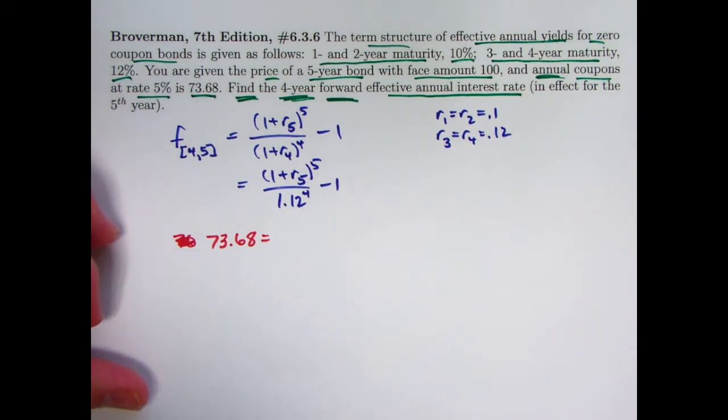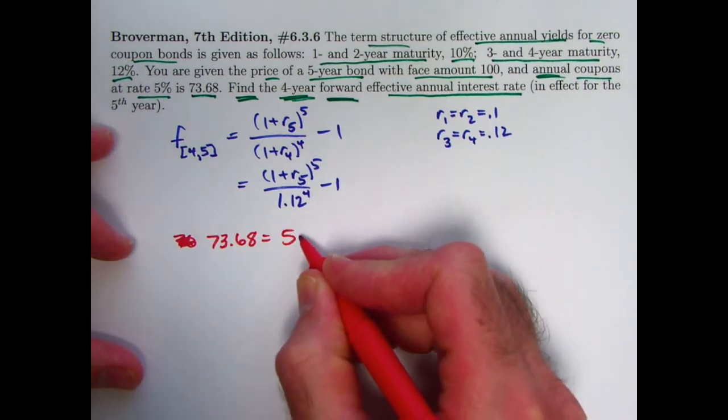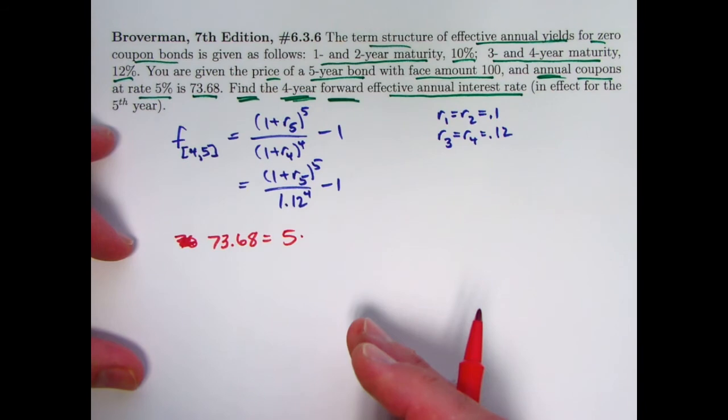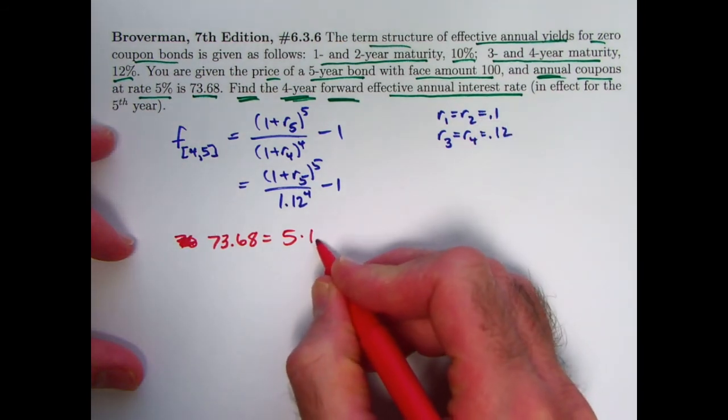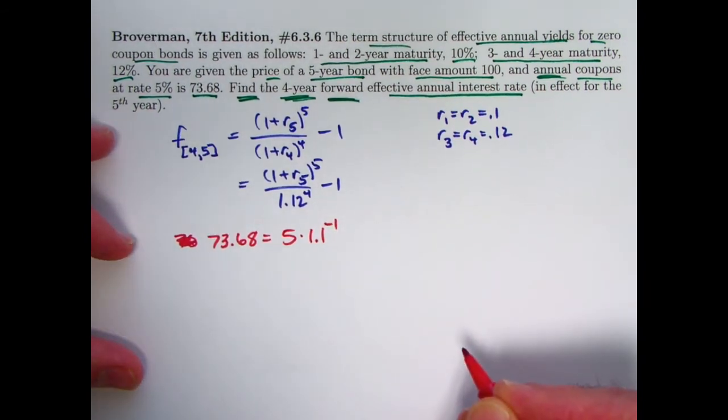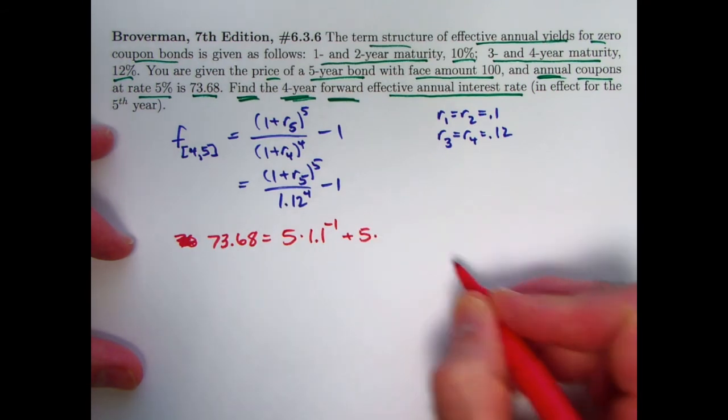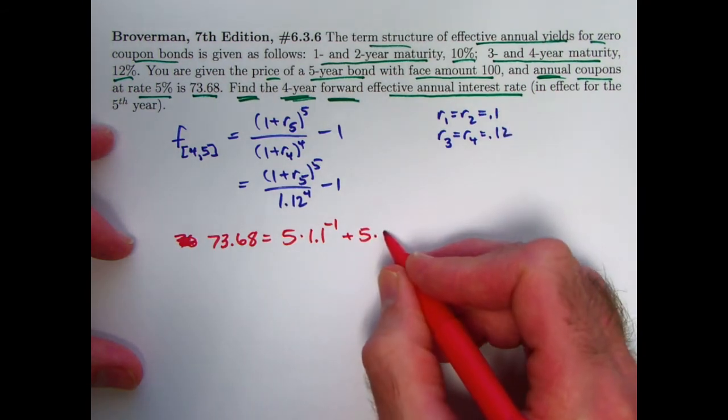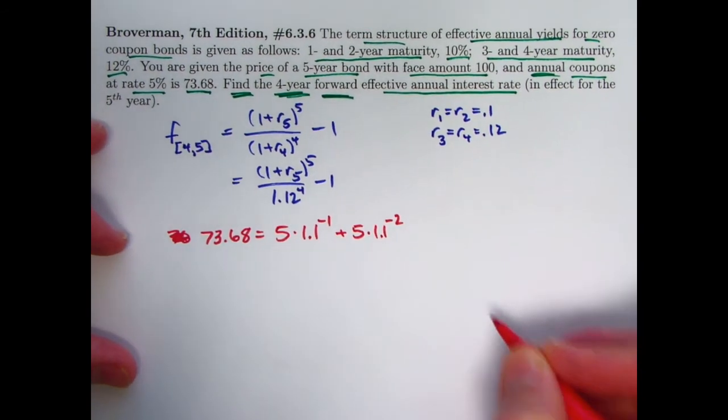So evidently, that equation of value is going to allow us to solve for R5 and then plug it into the original formula up here. We've got five coupons. The first coupon at time 1 needs to get discounted back to time 0 by using the spot rate R1. 1 plus R1 is 1.1. We need to raise it to the negative 1 power to go back to time 0. The next coupon at time 2 needs to go back 2 years, also using a spot rate of 10%. Multiply by 1.1 to the negative 2 power.